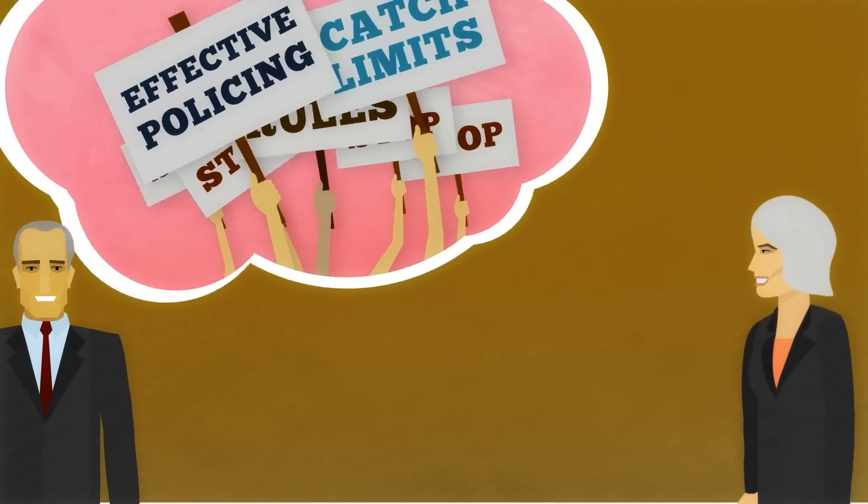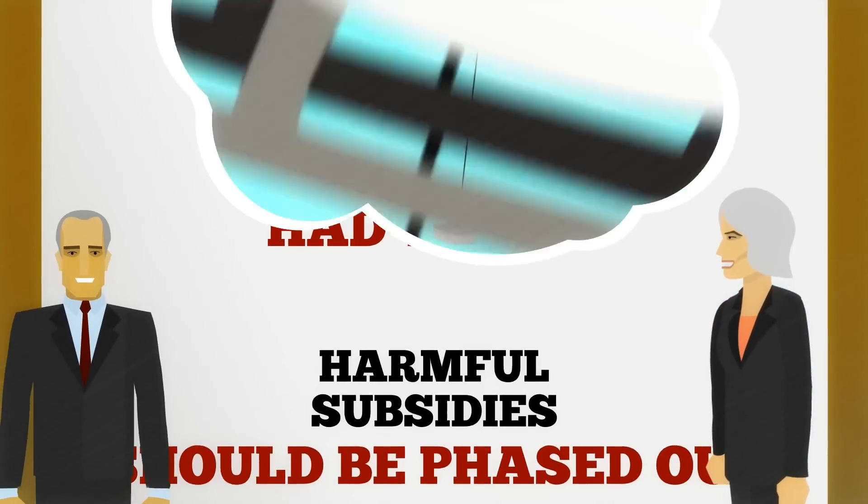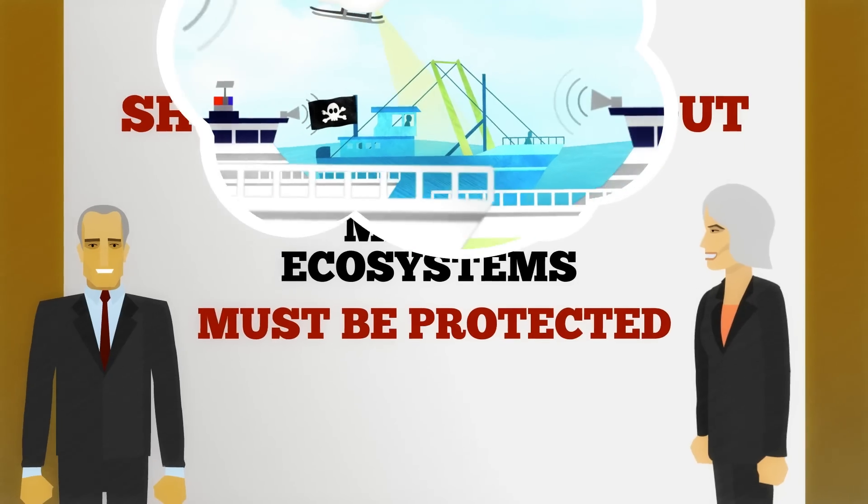Thankfully, governments agreed that from now on, both overfishing and illegal fishing had to end. Harmful subsidies should be phased out and vulnerable marine ecosystems must be protected.